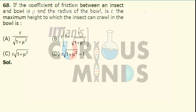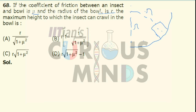The coefficient of friction between an insect and the bowl is mu, and the radius of the bowl is r. We have to calculate the maximum height till which the insect can crawl. If this is a bowl and the insect climbs till a certain height, the radius of the bowl will be equal to r at both sides.